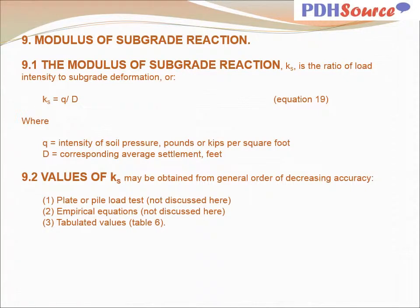The modulus of subgrade reaction is the ratio of load intensity to subgrade deformation, as indicated by equation 19. Values of K sub S may be obtained — in order of decreasing accuracy — by plate or pile load test, empirical equations, or tabulated values as indicated in Table 6.